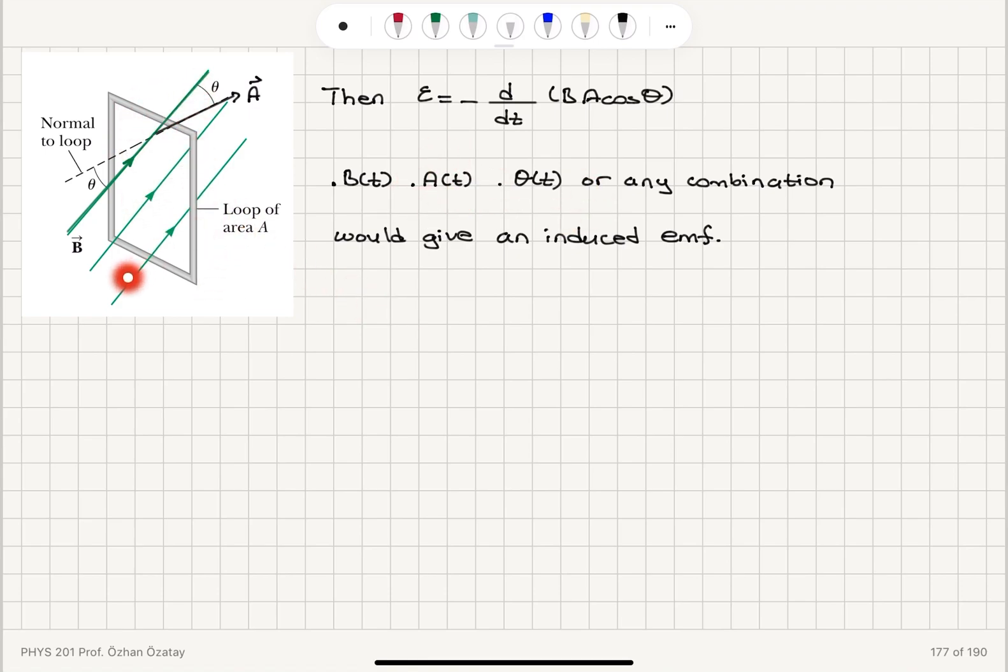Or the angle between the loop and the magnetic field or any combination, then I will have a contribution to this derivative. Therefore, it will give an induced EMF. The induced EMF may result from angular variation, area variation, or magnetic field variation.